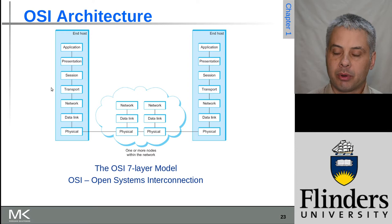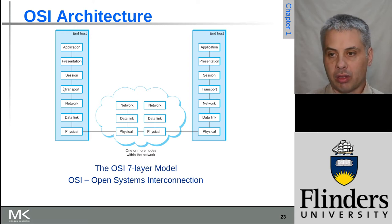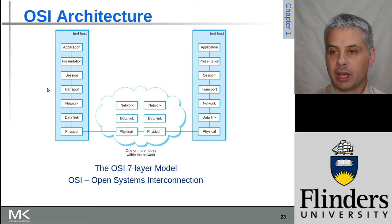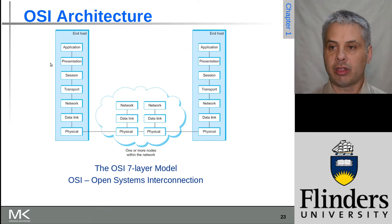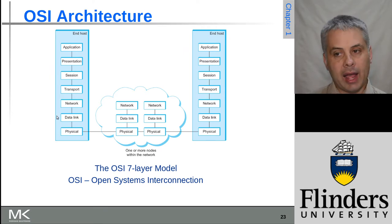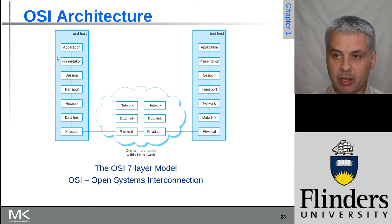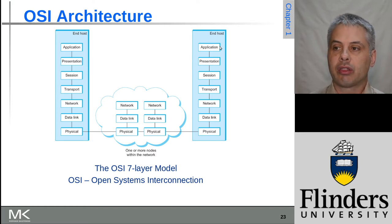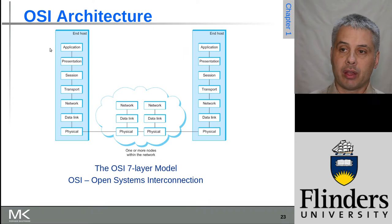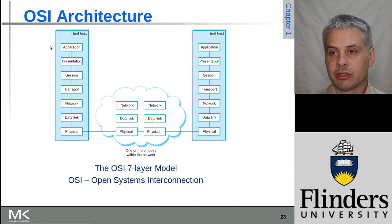The transport layer provides process-to-process communications, addressing from one application to another application at that level. Then at the top we have session, presentation, and application layers. The bottom four layers are actually quite similar across different systems, and it's above that where we tend to get differentiation. The application layer is typically present in most systems — for example, HTTP or some web streaming application at the top level.